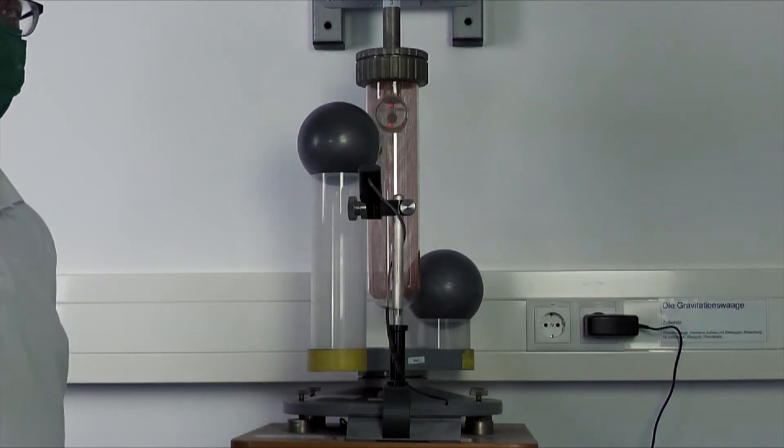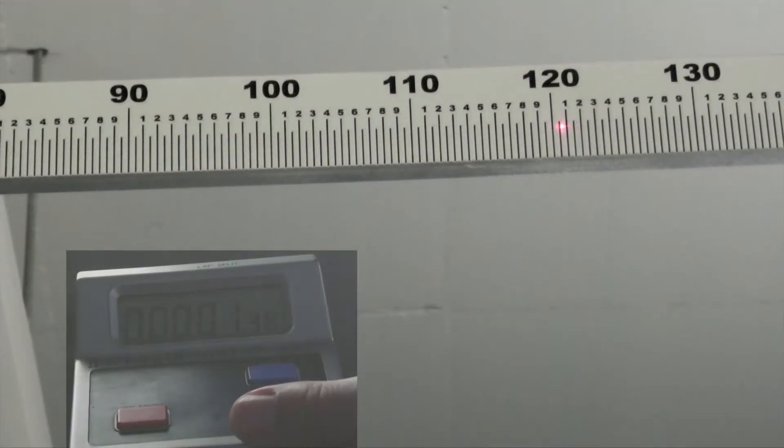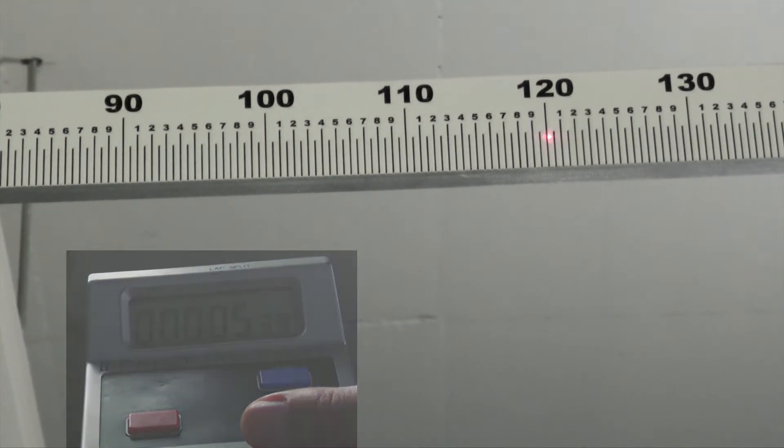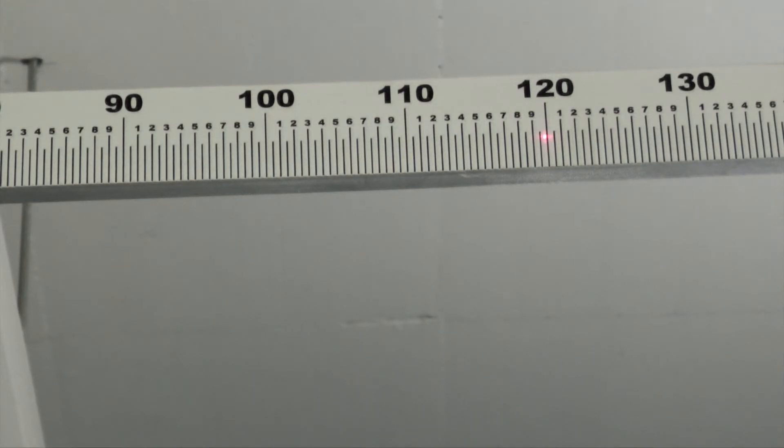The deflection is measured as before and no longer shown here. The gravitational constant is determined in the evaluation from the period of oscillation and final deflection.